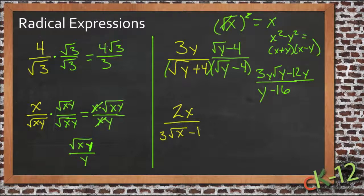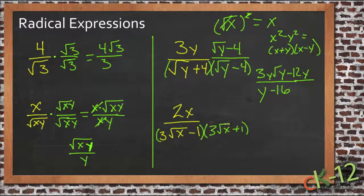And then the last example, we have 3 roots of x minus 1 in the denominator, so we're going to have to multiply that by the conjugate, which would be 3 roots of x plus 1, and we'll multiply the numerator by the same thing, 3 roots of x plus 1.